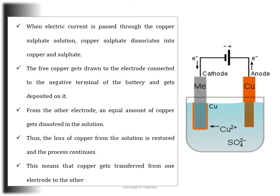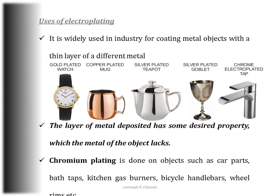This is the process of electroplating — depositing a layer of any desired metal on another material by means of electricity. Electroplating is one of the most common applications of the chemical effects of electric current. It is widely used in industry for coating metal objects with a thin layer of a different metal — for example, gold-plated watches, copper-plated mugs, silver-plated teapots, silver-plated goblets, and chrome-electroplated taps.